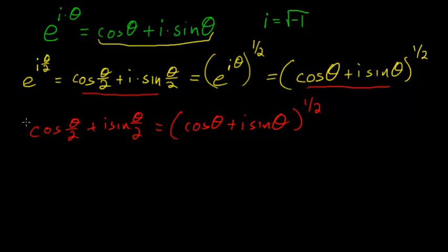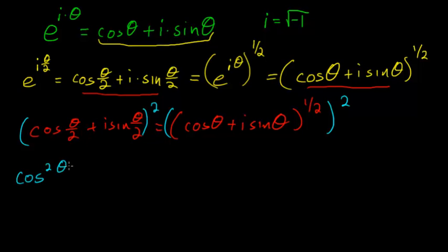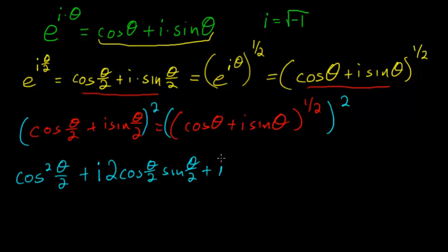So next we want to square each side, then we can simplify and set the real parts equal to each other and the imaginary parts equal to each other. If I square the left expression, I have the cosine squared of theta over 2 plus i times twice the cosine of theta over 2 times the sine of theta over 2 plus i squared times the sine squared of theta over 2, all equal to the cosine of theta plus i times the sine of theta.